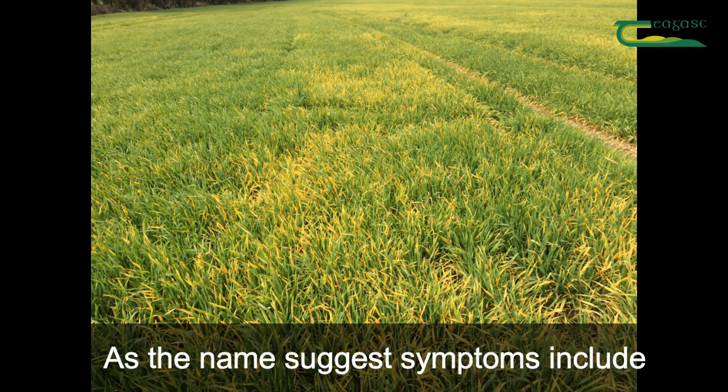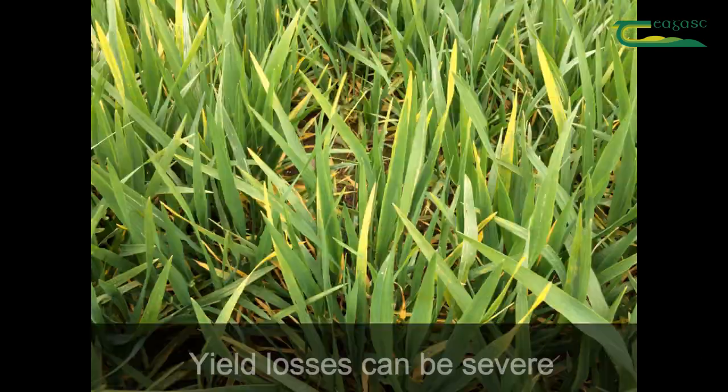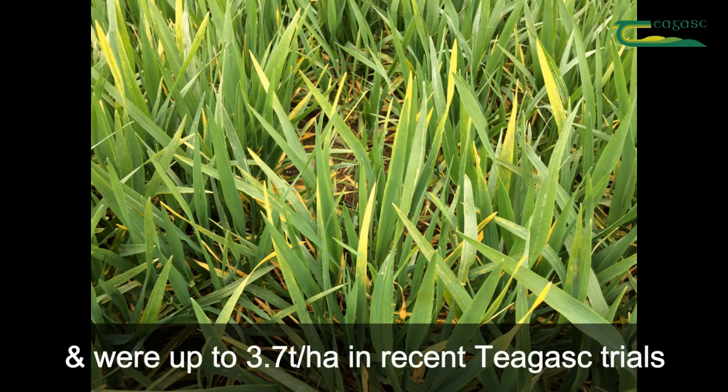As the name suggests, symptoms include short stunted patches of plants with yellow leaves. Yield losses can be severe and were up to 3.7 tonnes per hectare in recent Chagas trials.